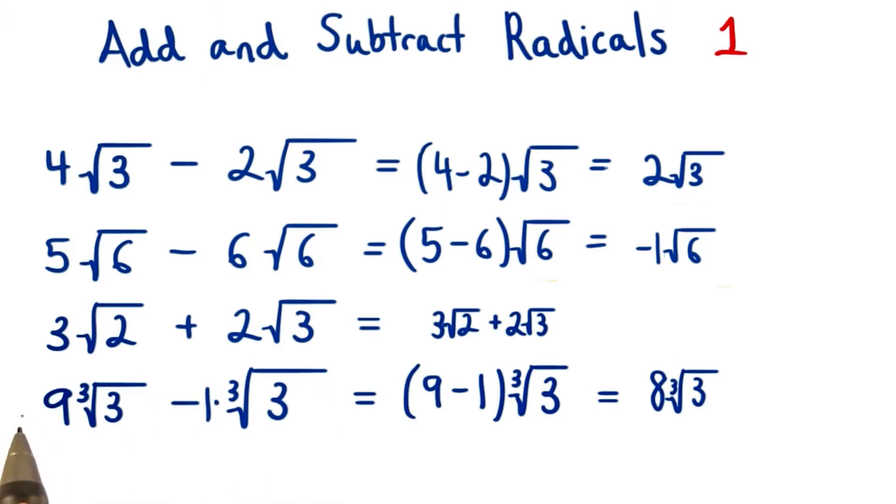This last problem was just like one we've seen before. We want to make sure that we have a 1 in front of this cube root of 3. So we're really subtracting 9 minus 1, which equals 8. We want to make sure that we keep our root on the end, so we have 8 times the cube root of 3.